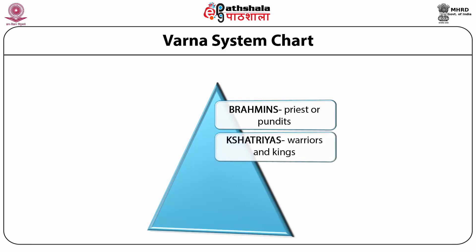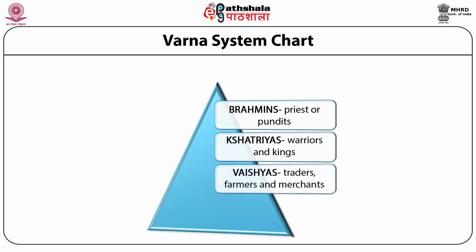Kshatriyas are basically the warriors or kings, commanded by tradition to protect the people, give gifts to Brahmins, offer sacrifices to gods, and dispense justice to the people — generally occupying the second spot in the ranking or hierarchy. Vaishyas are the merchants or businessmen, entitled to do work like lending money and trade-related activities, holding the third position. The Shudras, fourth in the hierarchy, are referred to as artisans and workers, whose only job was to serve the other three castes, holding the last position within the ranking system.